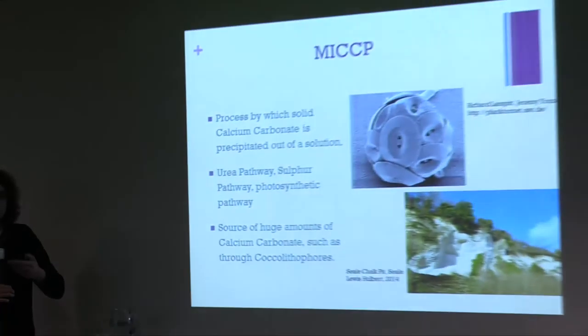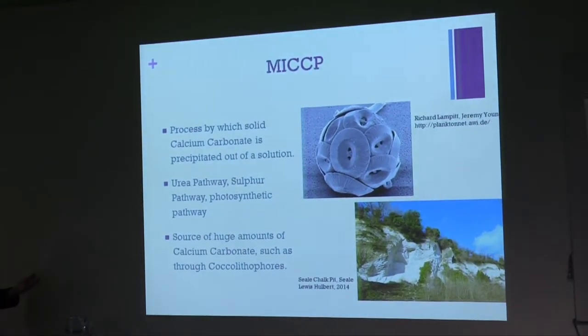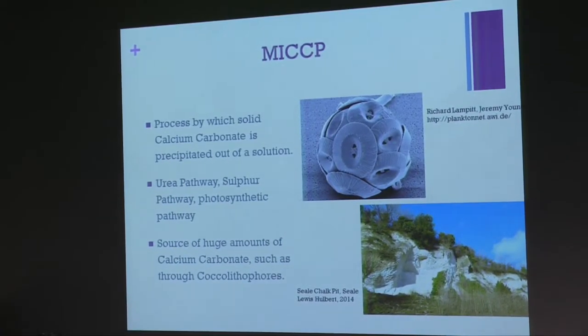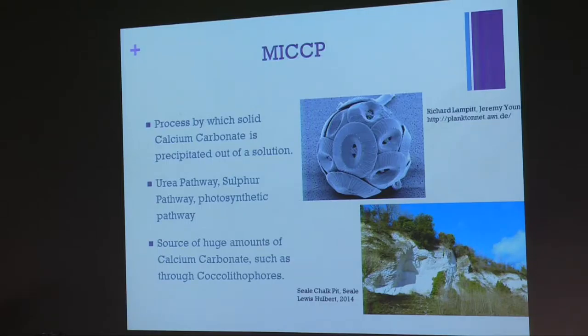My solution to this problem comes in the form of MICP, which stands for microbiologically induced calcium carbonate precipitation. It's a process that microbes can do that causes solid calcium carbonate to actually come out of solution. There are a couple of pathways that do this: ones that digest urea, ones that digest sulphur, and ones that work simply by photosynthesis. It's really prevalent. For example, most of the chalk in the world is actually formed through this process — being the calcium carbonate shells of coccolithophores, an ancient tiny microbe.